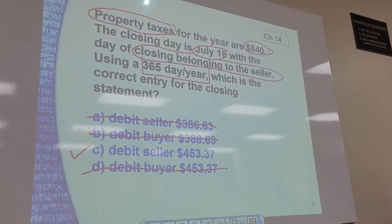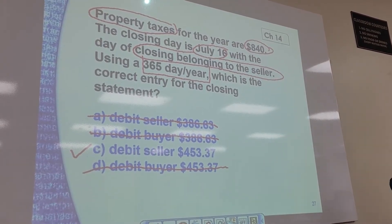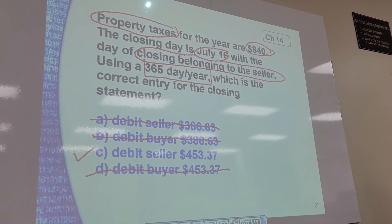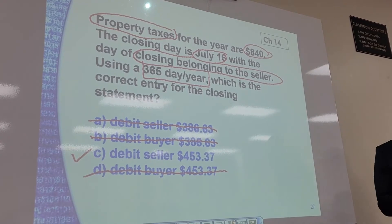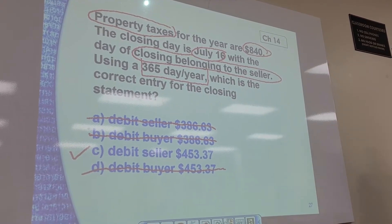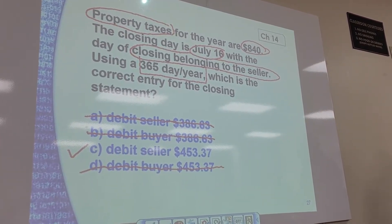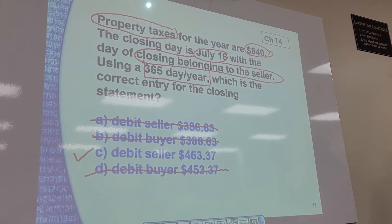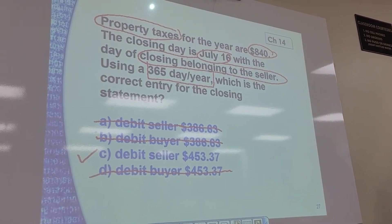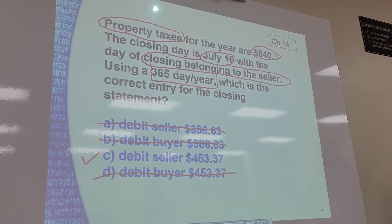The next way to do this is to do it this way. If closing day is July 16th, this is something I learned way back when I was in kindergarten school. My calendars are my knuckles. January, February, March, April, May, June, July, August. All the knuckles are 31 days. All the valleys are 30 days.